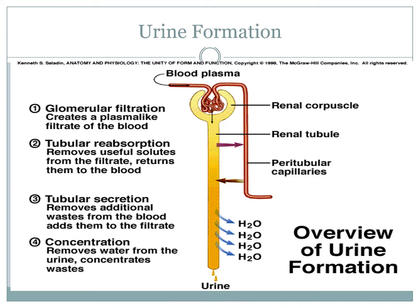When you look at urine formation it can be broken down into four different steps. As an overview, we have glomerular filtration at the Bowman's capsule, tubular reabsorption and tubular secretion within the same structures, and then we finish at concentration — where we decide whether or not to keep or remove water. This entire process takes place in the nephron found in the kidney.